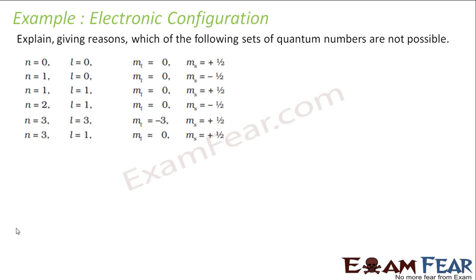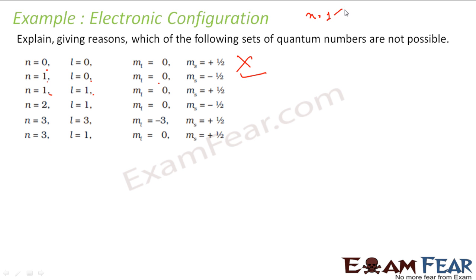Which of the following are not possible? n=0 is not possible because the minimum value of n is 1. For n=1, L=0, ML=0 — this is possible since L is less than n. For n=1, L=1 — this is not possible because if n=1, L can only be 0; it must be less than n.